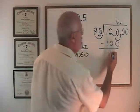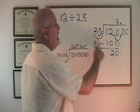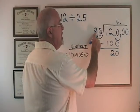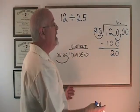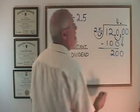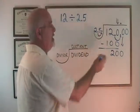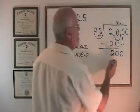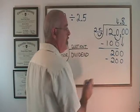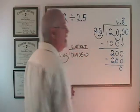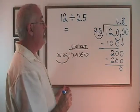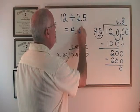120 minus 100 is 20. And this number has to be smaller than my divisor — it is. Therefore, 25 will not fit into 20, so I have to make this number bigger. I slide one of these zeros down and I ask: does 25 fit into 200? Yes — exactly 8 times. I write the 8 here. 8 times 25 is 200. I subtract and I get zero, which means I am finished. Therefore, the answer to 12 divided by 2.5 is 4.8.